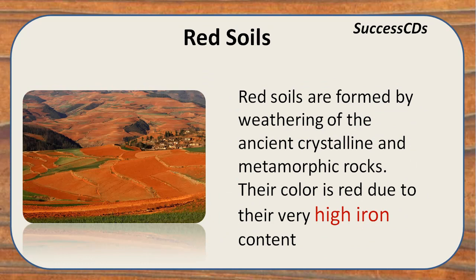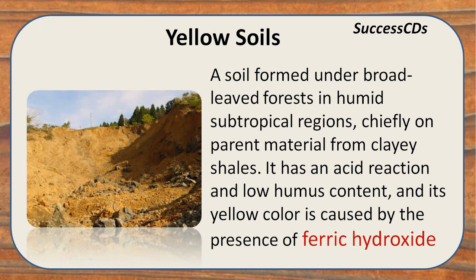Red soil got its red color due to a high concentration of iron. It is made from weathering of ancient crystalline metamorphic rocks and is suitable for crops like bajra. Dark-colored red soil is suitable for wheat, pulses, tobacco, and jowar. Yellow soil got its color from the presence of ferric hydroxide, is found in humic subtropical regions, is acidic in nature, has low humus content, and is ideal for grapes, essential oil plants, tobacco, and vegetables.